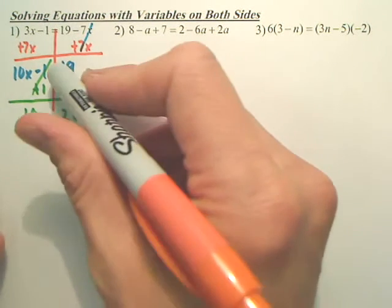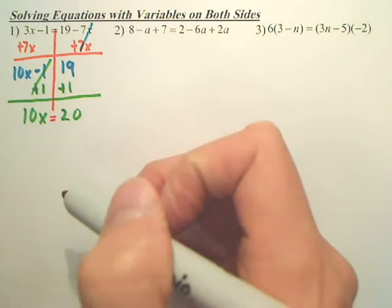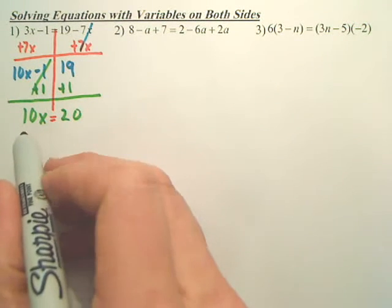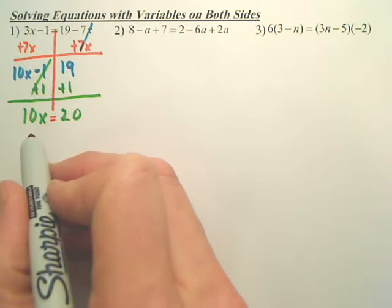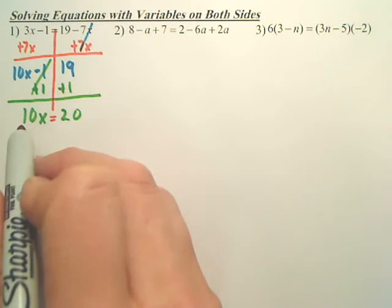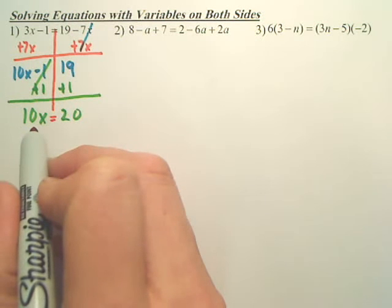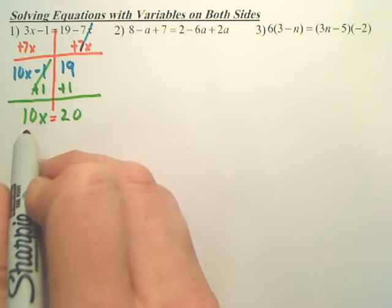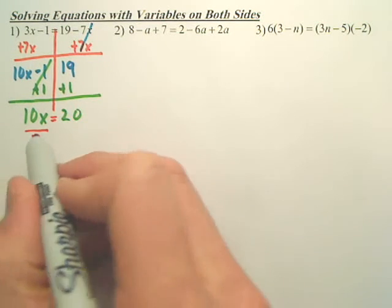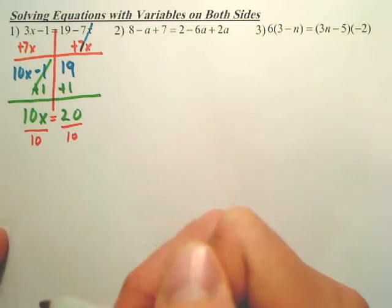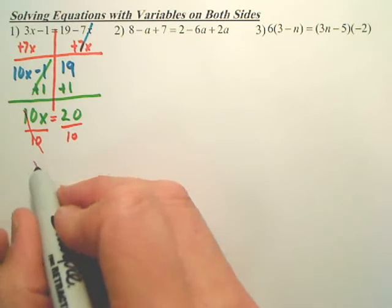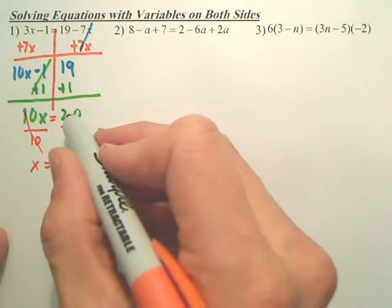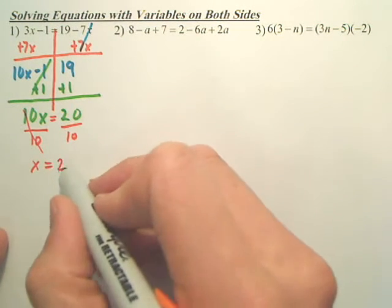Now, we still have that line or you can just start putting your equal sign, whatever you want. The last step, some of you could look at this and tell x is 2, but the last step is that 10 is connected to the x by multiply. The opposite of multiply is divide. So you're gone, leaving you just x. 20 divided by 10 is 2.